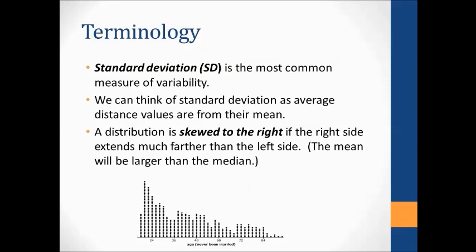Standard deviation is the most common measure of variability — think of it as approximately the average distance values are from their mean. If the standard deviation is zero, all numbers are the same. The more spread out a data set is, the larger the standard deviation; it can't be negative. A distribution skewed to the right has most data piled up on the left, pulled out to the right. The mean gets pulled in the direction of the skewness, so for right-skewed data the mean is larger than the median. The median is a resistant measure of center, while the mean is not — it gets pulled by skewness and outliers.